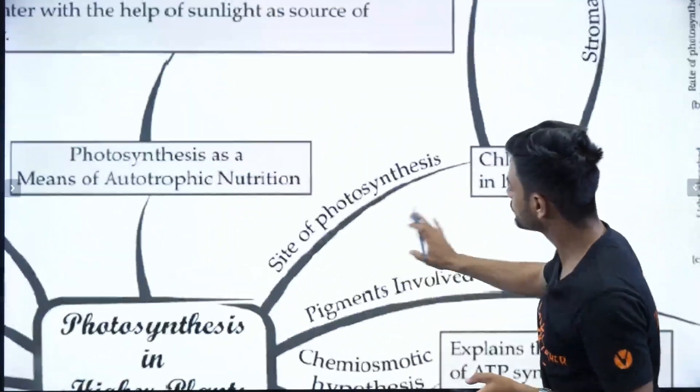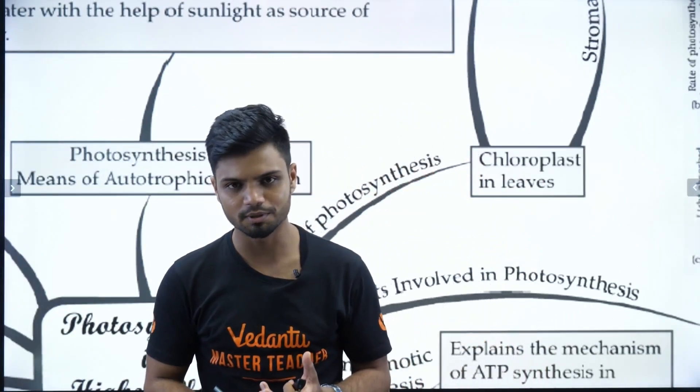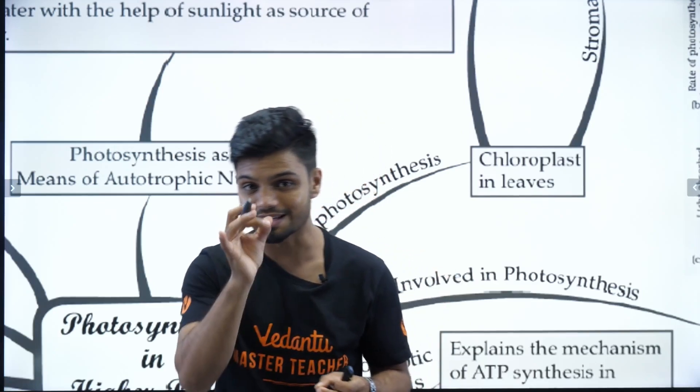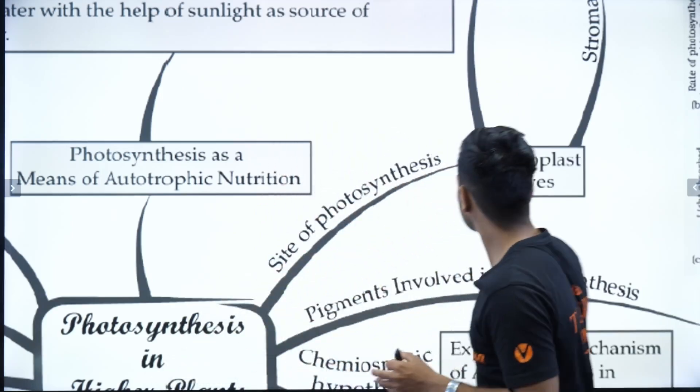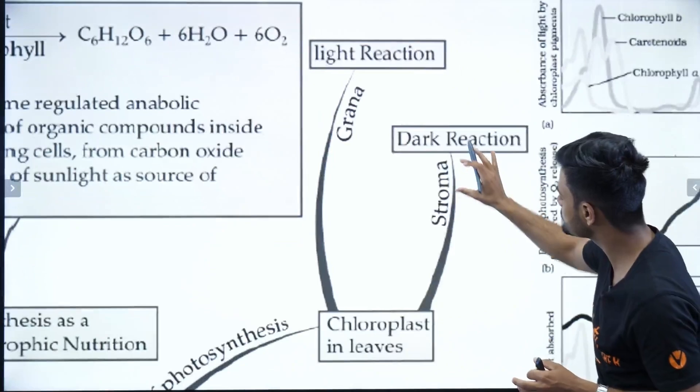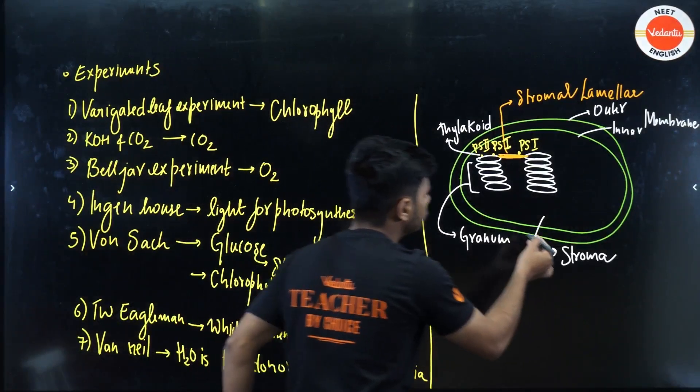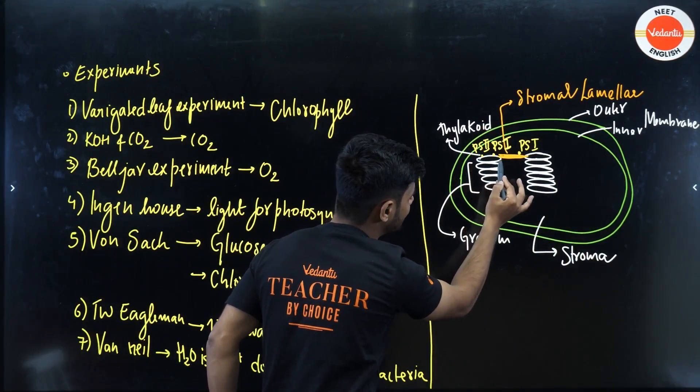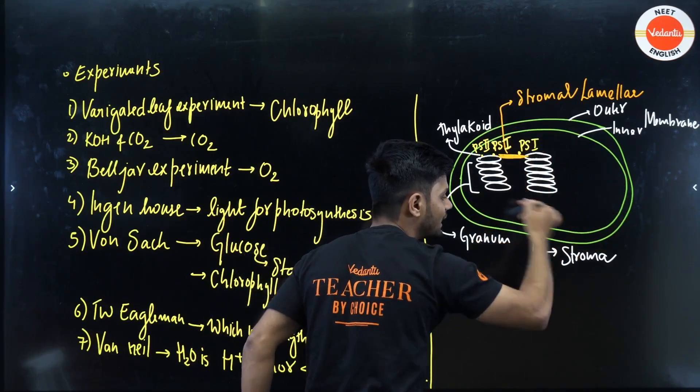Then we go on to the site of photosynthesis. So where does the photosynthesis take place? The answer is very simple. The photosynthesis takes place inside the chloroplast. Inside the chloroplast, we have the grana where the light reaction takes place. And we have the stroma where the dark reaction takes place. If you look at the diagram here, we know the chloroplast is a double membrane structure where we have thylakoids. Each coin is a thylakoid. The entire stack is called grana.